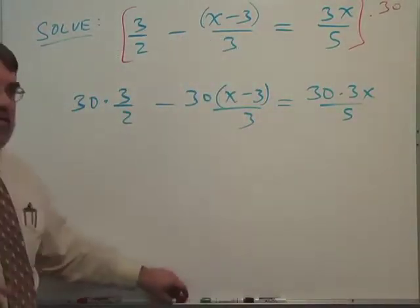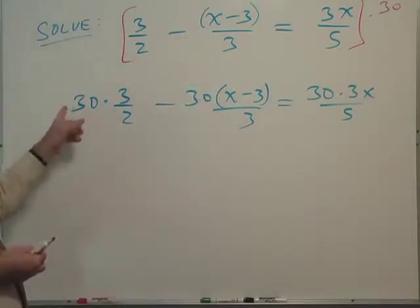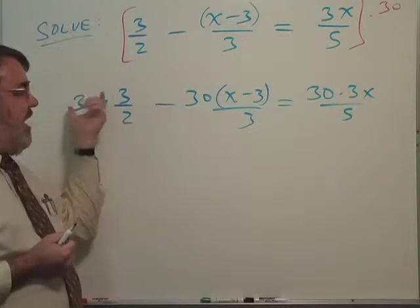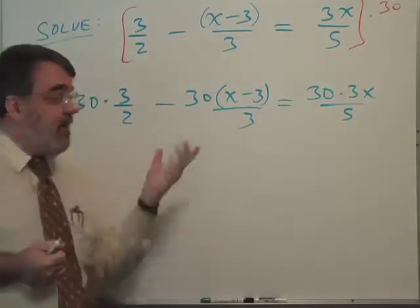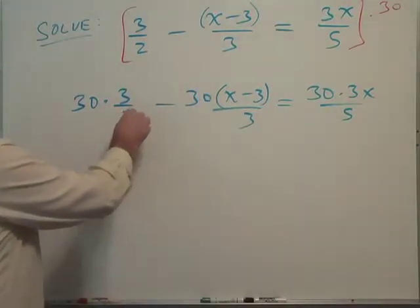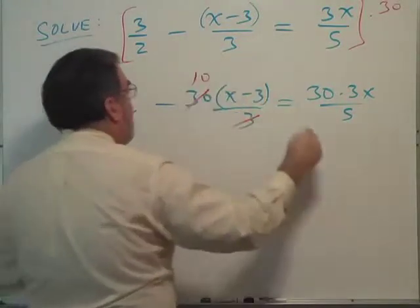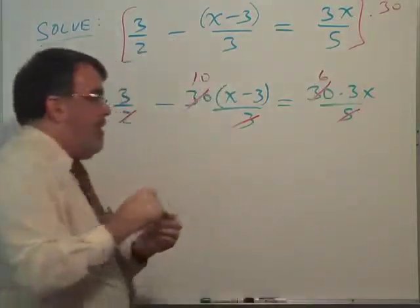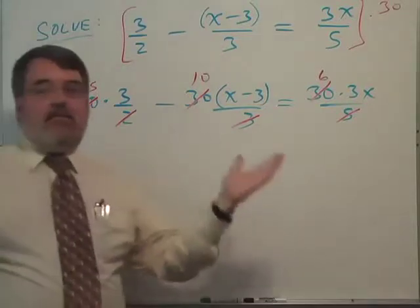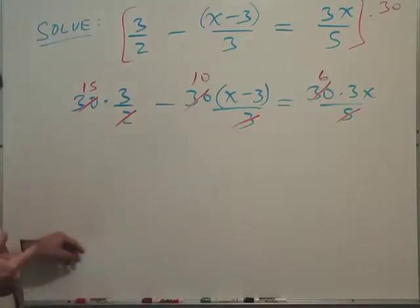Now, the miracle of this is that all the denominators disappear. Because when you multiply by a common denominator, the common denominator has each denominator as a factor. The denominators will cancel out with the numerators. 2 goes into 30 fifteen times, 3 goes into 30 ten times, and 5 goes into 30 six times. Look at that, no more fractions. We magnified this problem by a factor of 30, and all the fractions went away.